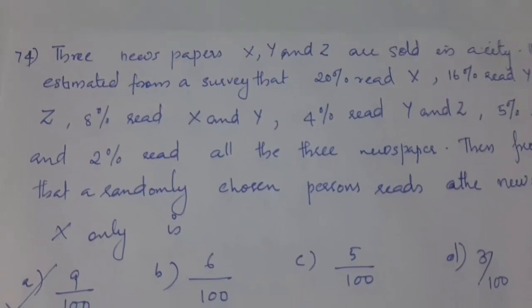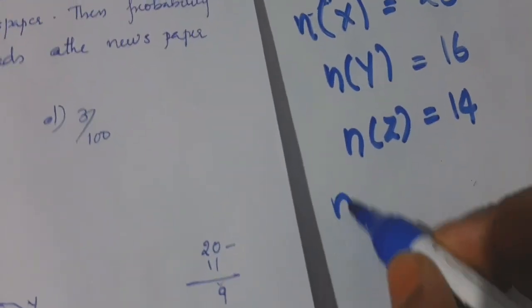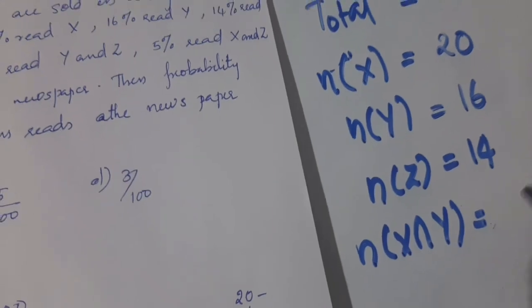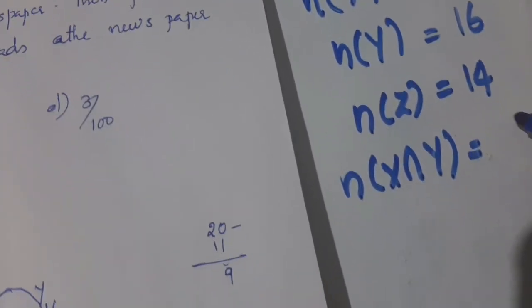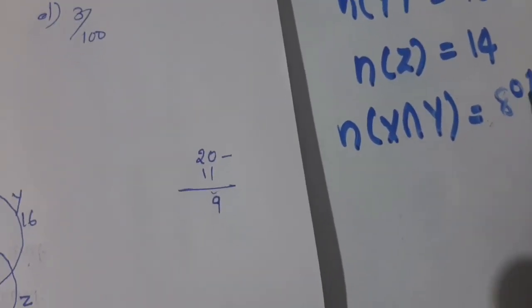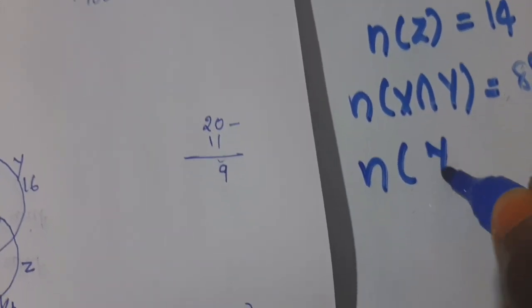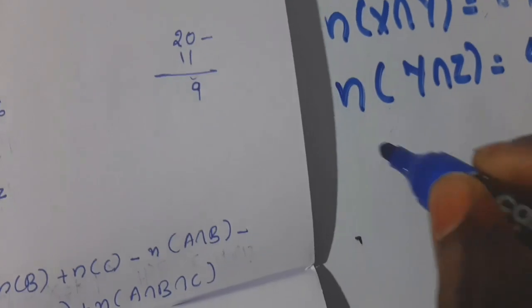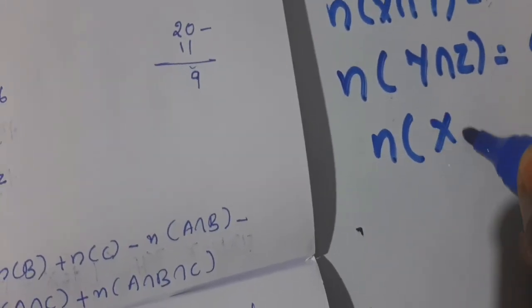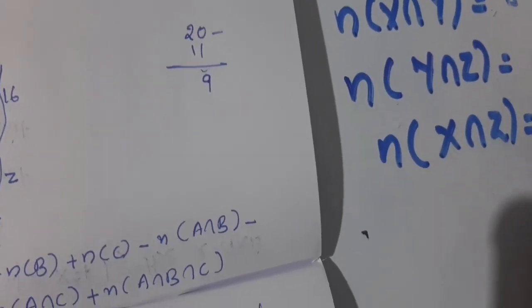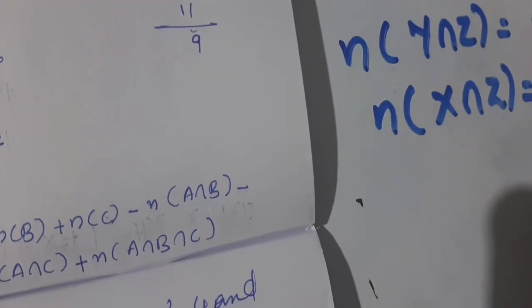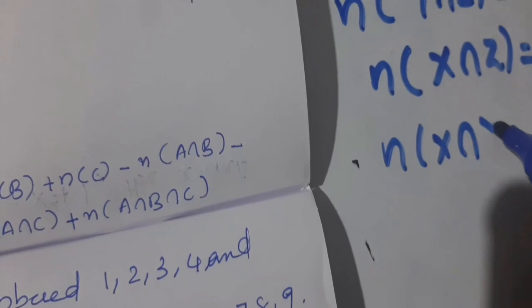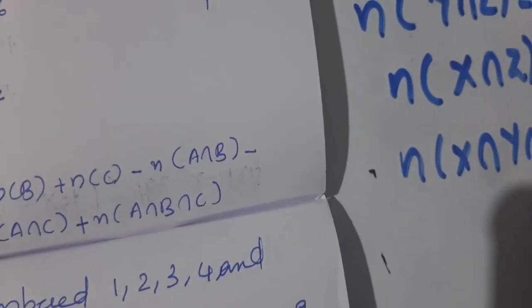The intersection values are: n(X ∩ Y) = 8%, n(Y ∩ Z) = 4%, n(X ∩ Z) = 5%, and n(X ∩ Y ∩ Z) = 2%.